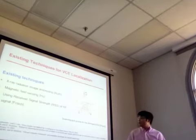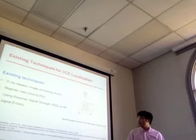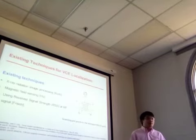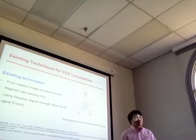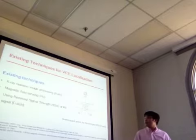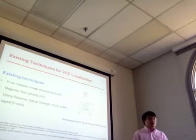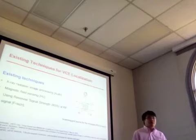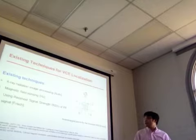The magnetic sensing method used to localize the capsule requires magnetic components that increase both the size and weight of the capsule. Additionally, the magnetic field generated by the capsule interferes with external magnetic fields, such as those generated by MRI systems.